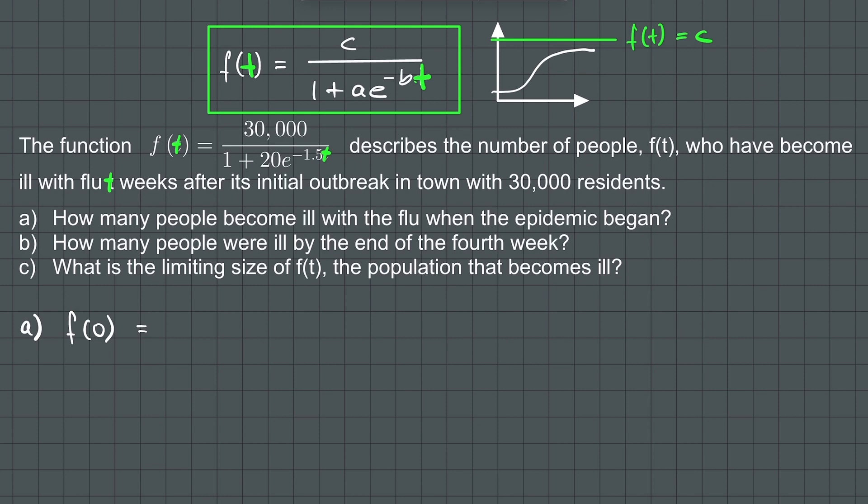So we can write f(0) equals 30,000 over 1 plus 20 times e raised to the power of negative 1.5 times 0. The negative of 1.5 times 0 is 0. And any non-zero number raised to 0 is 1. And 20 times 1 is 20.